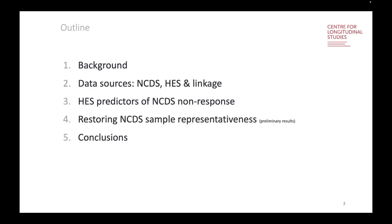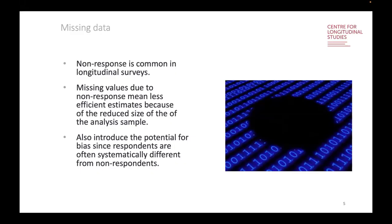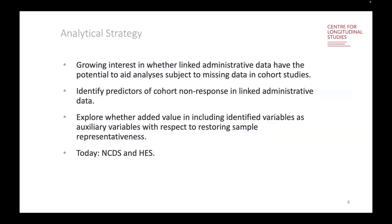A brief outline: I'll cover some background, then the data — the NCDS data and the recent HES linkage — and then the work we've been doing to identify predictors of non-response using the HES data, then restoring the NCDS sample representativeness as some preliminary results, and then conclusions. Non-response is quite common in longitudinal surveys. One of the biggest issues is the introduction of bias, because people who respond tend to be fundamentally different from people who don't respond. For example, in other longitudinal data, people from an ethnic minority background are less likely to respond as time goes on, and more highly educated people are more likely to respond. There is a growing interest in whether linked administrative data has the potential to aid analysis subject to missing data in cohort studies.